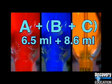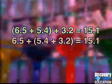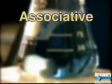Adding that to the 6.5 milliliters of solution A gets 15.1 milliliters. Same result. The associative property means it doesn't matter which two numbers in your equation you associate with each other first. In fact, think of the word "associate" when you want to remember what the associative property is. An operation has the associative property if the numbers can be grouped in any way without affecting the result.